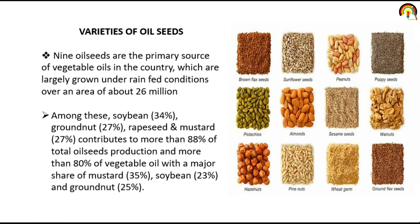There are several varieties of oil seed. It can be sunflower seed, peanut, walnut, sesame seed, almond, pine nuts, wheat germ, groundnut seeds, or chia seeds. Nine oil seeds are the primary source of vegetable oil in the country, which are largely grown under rain-fed conditions over an area of about 26 million hectares. These nine oil seeds — including soya bean, ground nut, and mustard — contribute to more than 88% of total oil seed production.